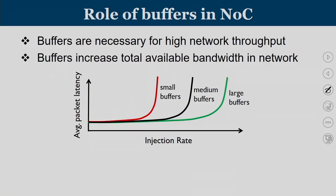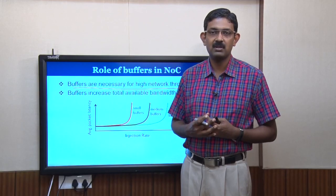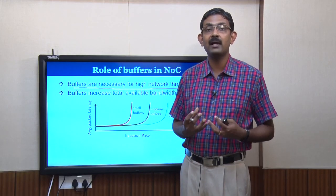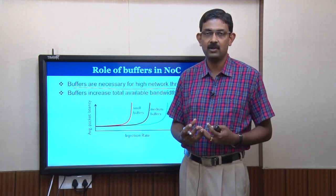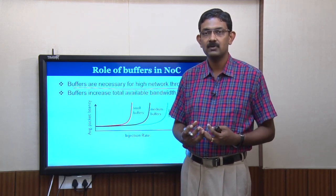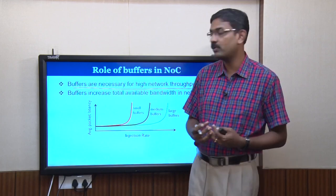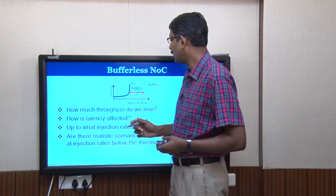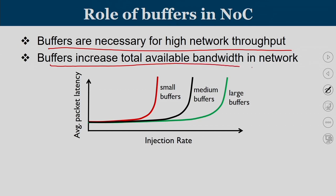What is the role of buffers in NOC? Buffers are necessary for high network throughput because they hold your packets. When you have more buffers available inside a network, you can accommodate more packets. More the number of buffers, more will be the throughput of the network. Buffers increase the total available bandwidth in the network.